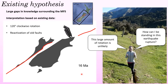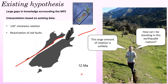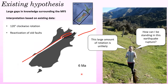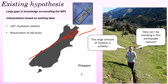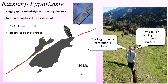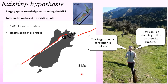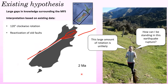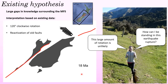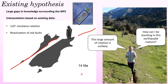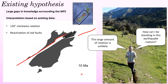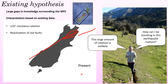Currently there are large gaps in knowledge surrounding the structural geology of the Marlborough fault system, and geologists have made a hypothesis of development based on interpretation of existing data. This involves the Marlborough fault system rotating 120 degrees over the last 20 million years, followed by the reactivation of pre-existing weaknesses as old faults in the earth's crust.